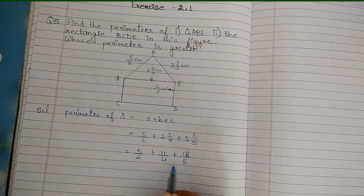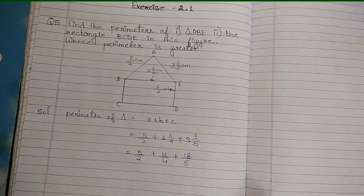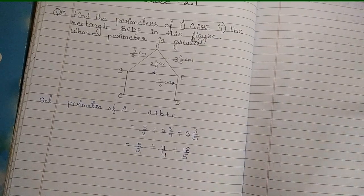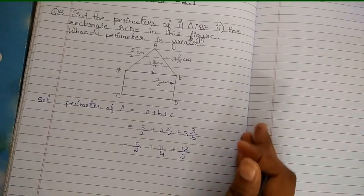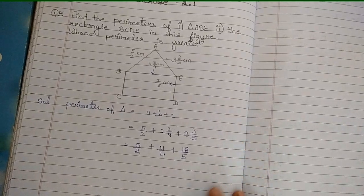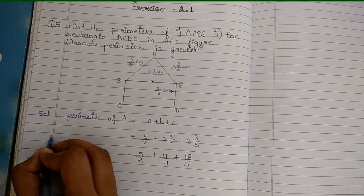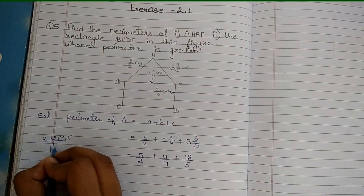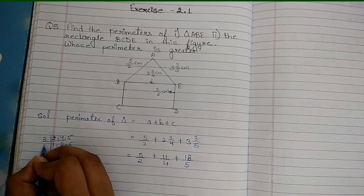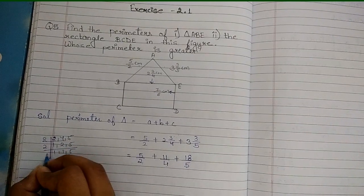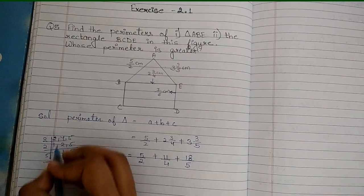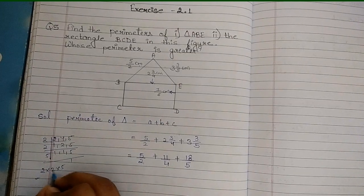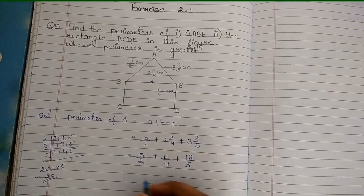Now the denominators are different, so we have to make them the same. We use LCM. The denominators are 2, 4, and 5. Taking LCM: 2 into 2 into 5 — 2 times 2 is 4, times 5 is 20. So LCM is 20.